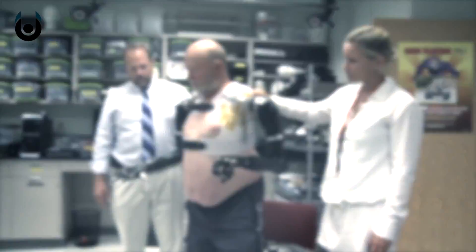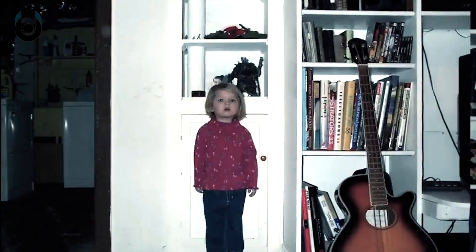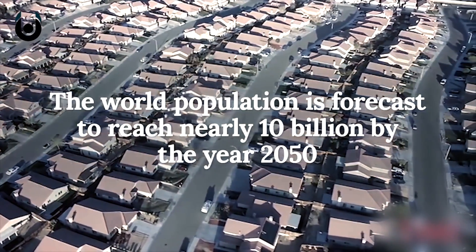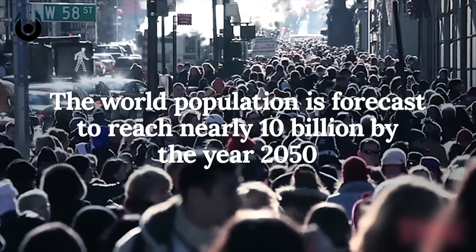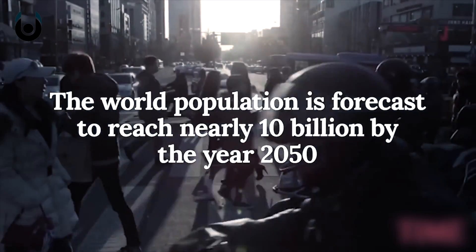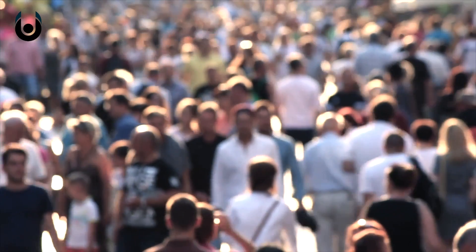But let's say that we do someday find a way to reverse the aging process. The planet will have a global population of 9.5 billion people by the year 2050. Our planet will struggle to sustain that kind of life with our diminishing resources. And people living forever would only compound to these problems.